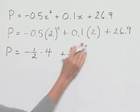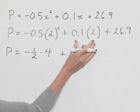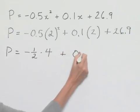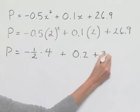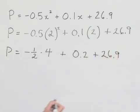Let's go ahead and multiply in our middle term. We have 1 tenth times 2 to give us 2 tenths. And then we bring down our last term of 26 and 9 tenths.